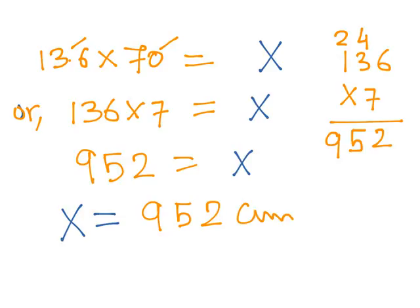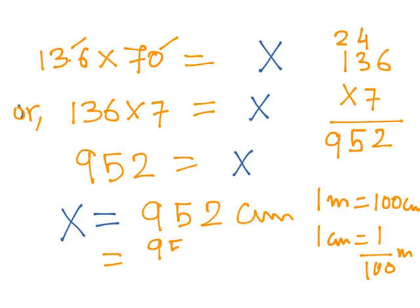So to convert into meters, you have to divide this by hundred because we know one meter is equal to hundred centimeters. So dividing 952 by hundred is nothing but 9.52 meters. This is your answer for the first part.